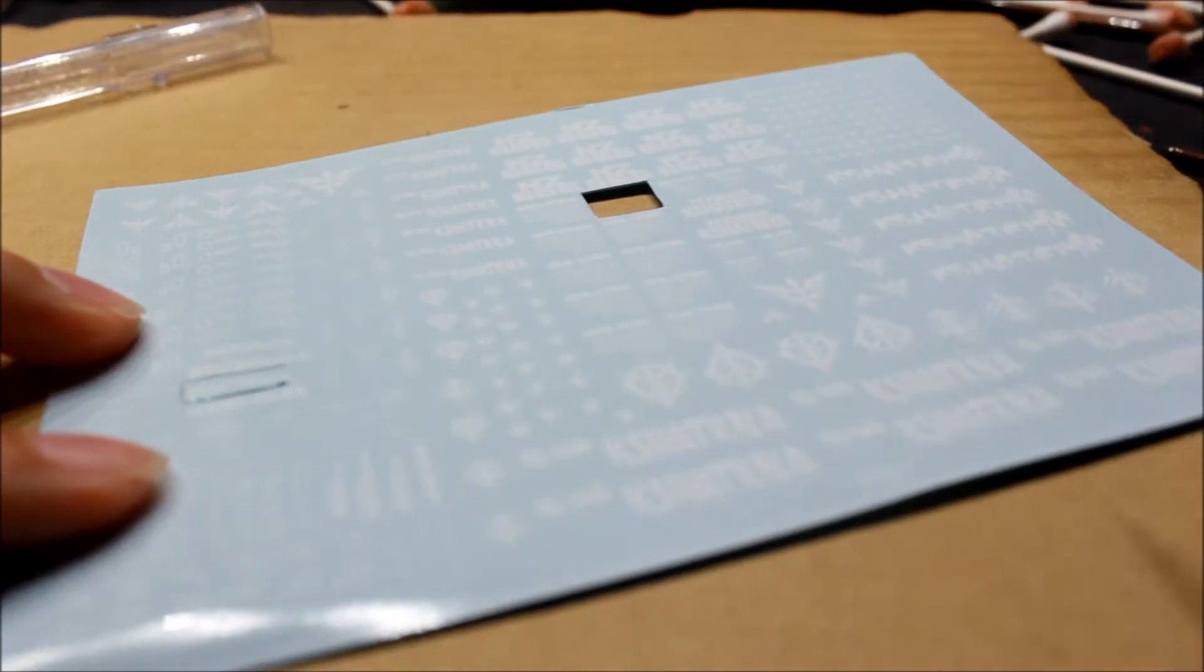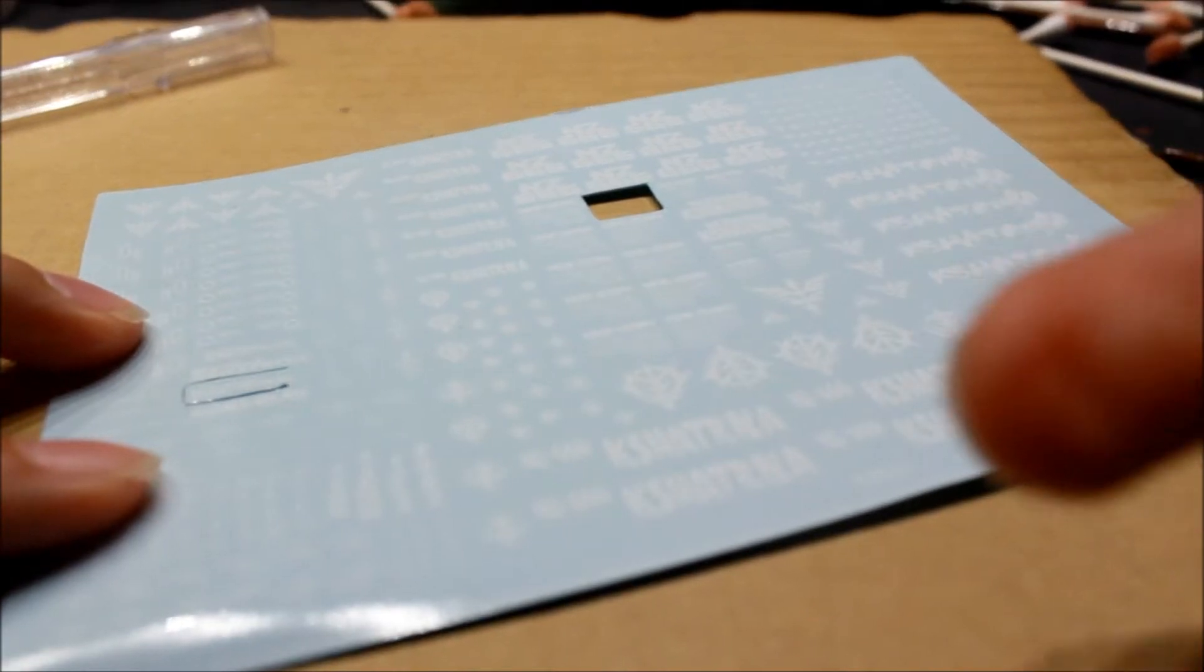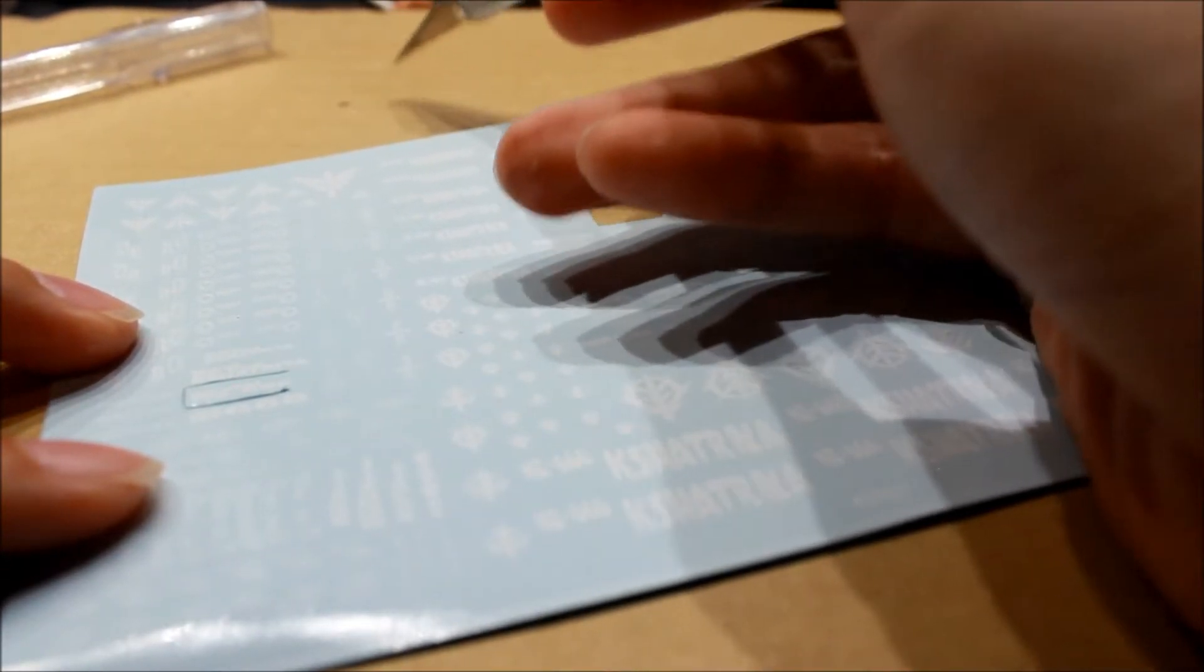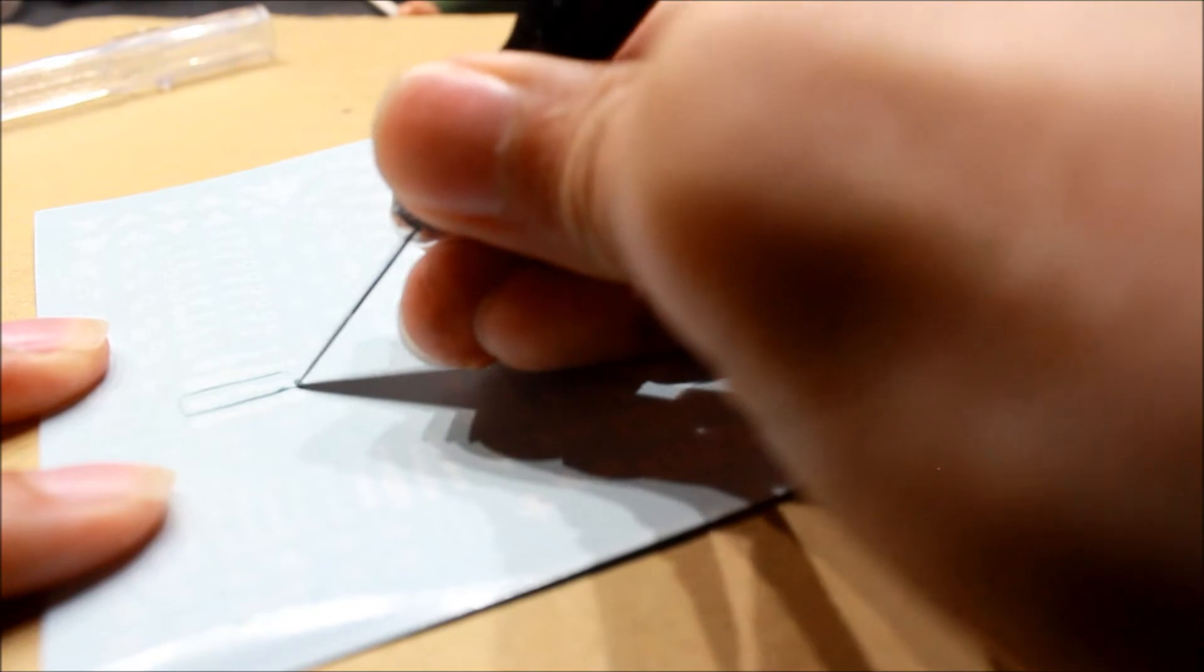So I'm actually cutting the decals and I have my ghetto cutting board here - literally it's a cardboard box. I'm just cutting the decal as you can see.